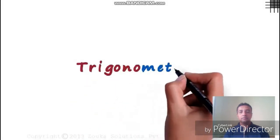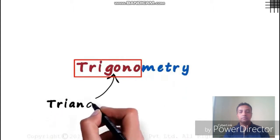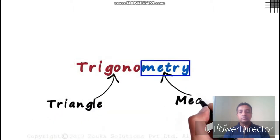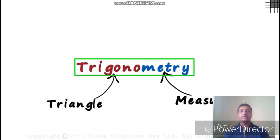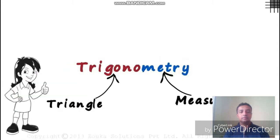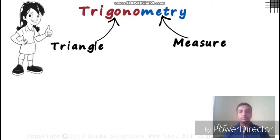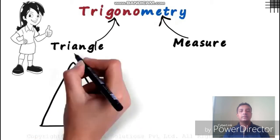What does trigonometry actually mean? The word has two parts: the first part means triangle and the second part means measure. Trigonometry is one of the most feared topics in mathematics, but in reality it is extremely simple. The meaning itself is so simple — it is just the measure of all the things possible in a triangle.